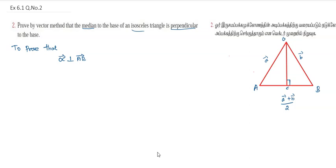The median is the line from the opposite vertex to the midpoint of the base, dividing it equally. Let OA vector equal A vector, OB vector equal B vector, and OC vector — the median endpoint — equal (A vector plus B vector) divided by 2, since C is the midpoint in a 1:1 ratio.